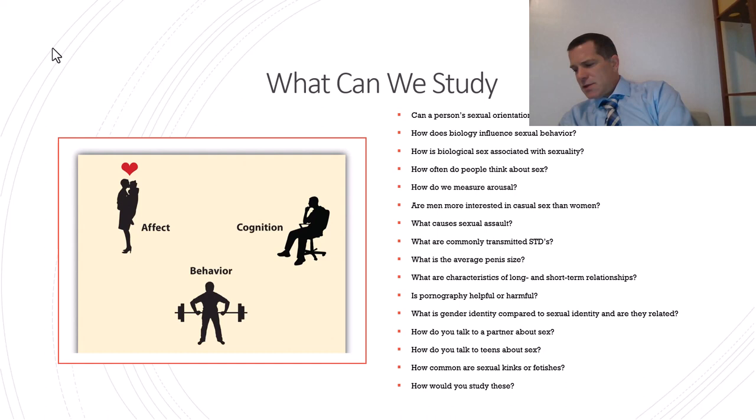You guys do have a chapter on it. It's chapter 17, sexual coercion, and 18, sex for sale. There's a little bit of darkness in this class that's always hard to talk about. What are commonly transmitted STDs? How do we track them? How do we prevent them? What's the average penis size? These are all from your book. What are characteristics of long and short-term relationships?